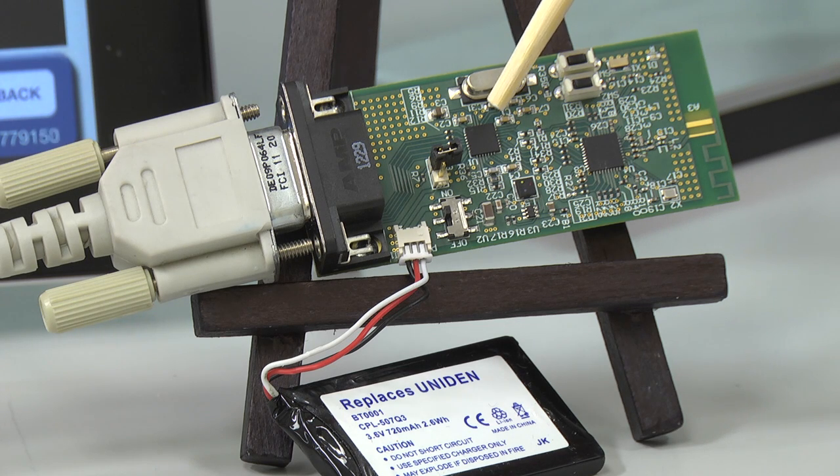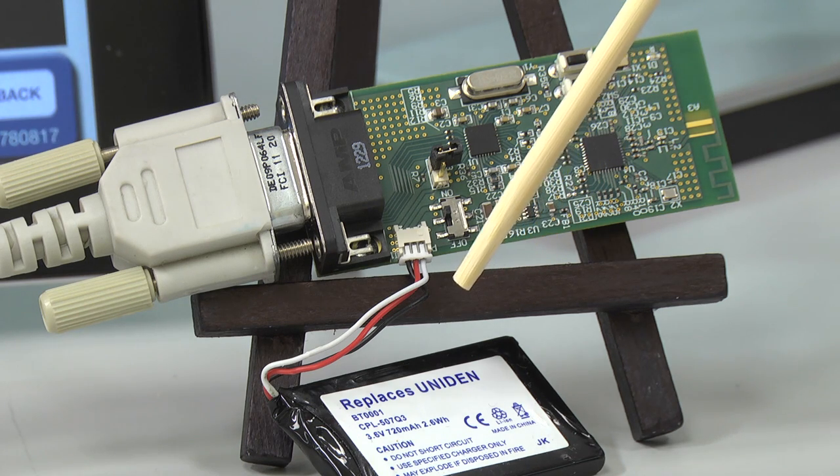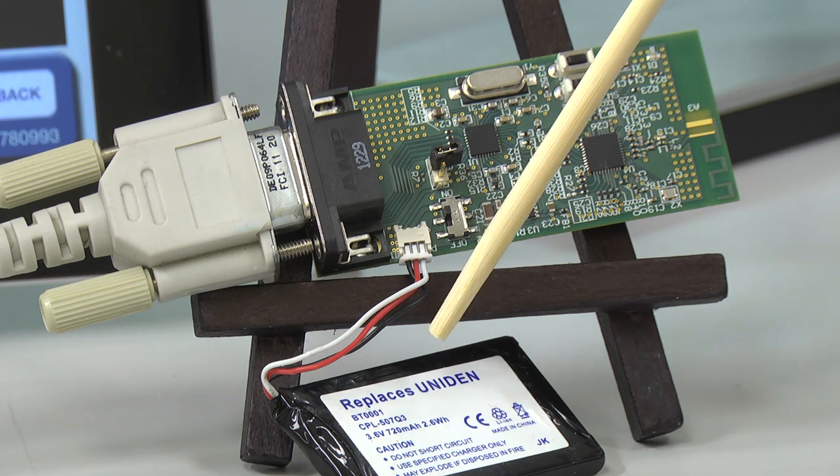On the demo board is the ADS1293 device, which is this ECG AFE. The ADS1293 is capturing the heartbeat signal and digitizing it, and this data is transferred wirelessly using this Bluetooth CC2541 device. On the very bottom you see here is a lithium-ion battery, which is powering the board.